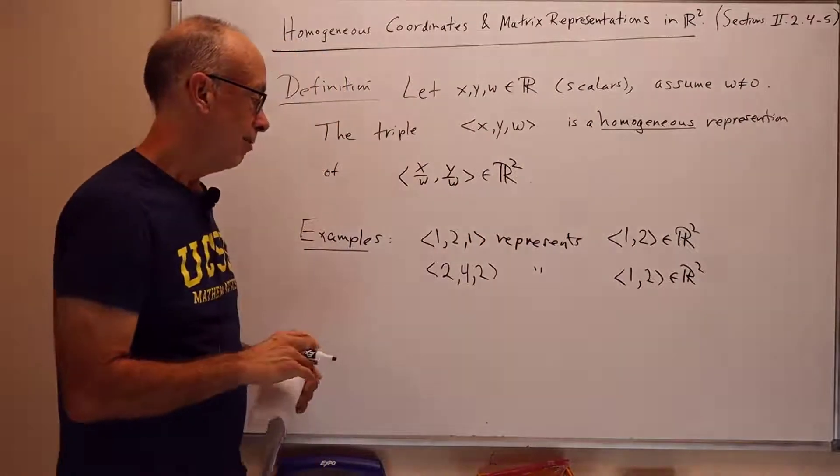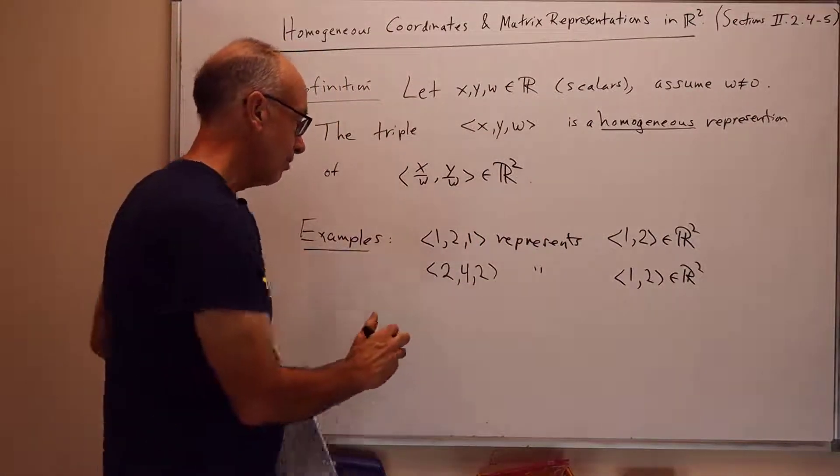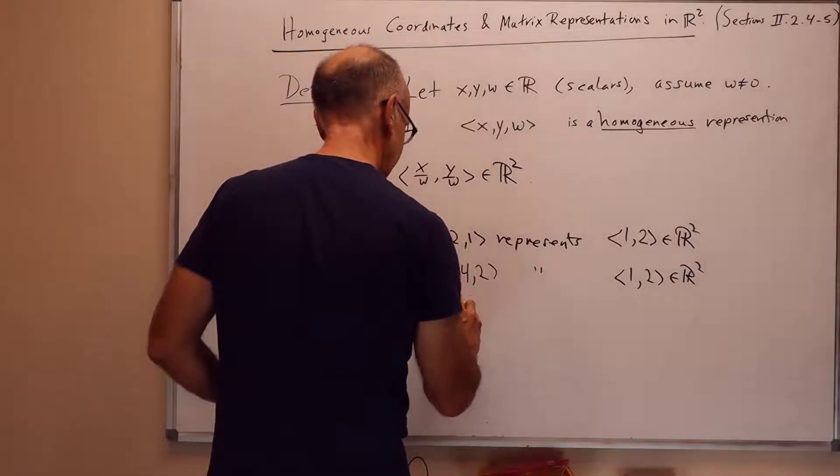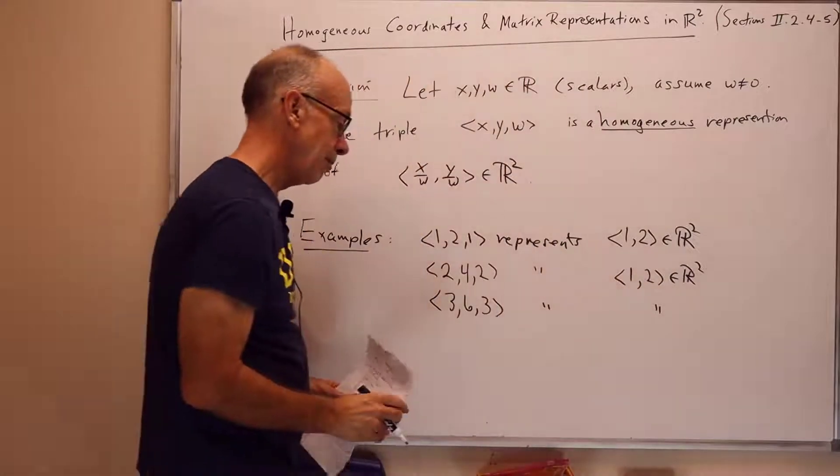Because 2 over 2 is 1, and 4 over 2 is 2, so 1, 2. Of course, the pattern continues. <3, 6, 3> also represents exactly the same point.